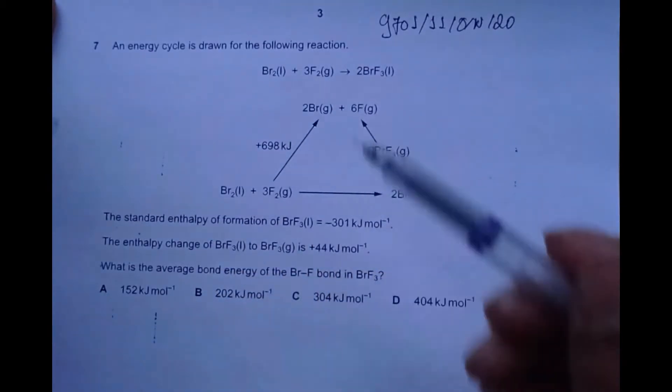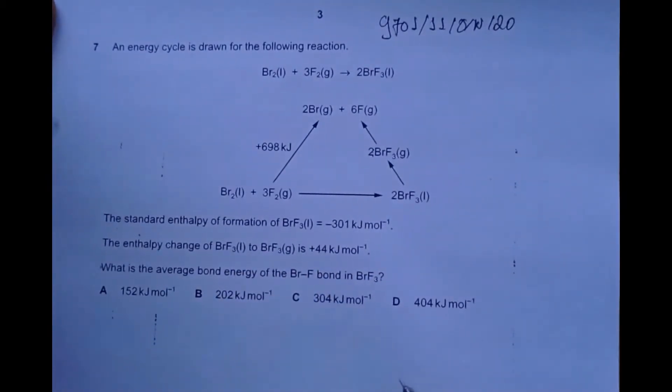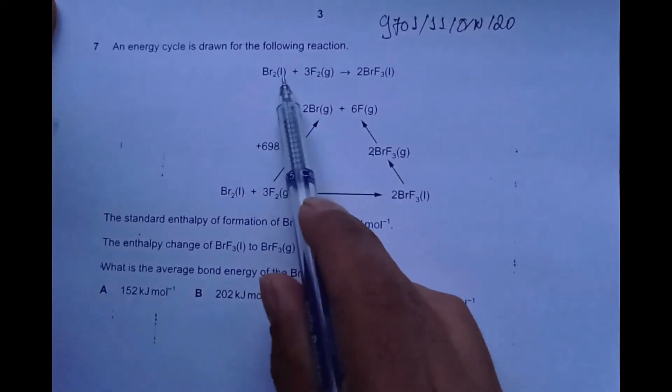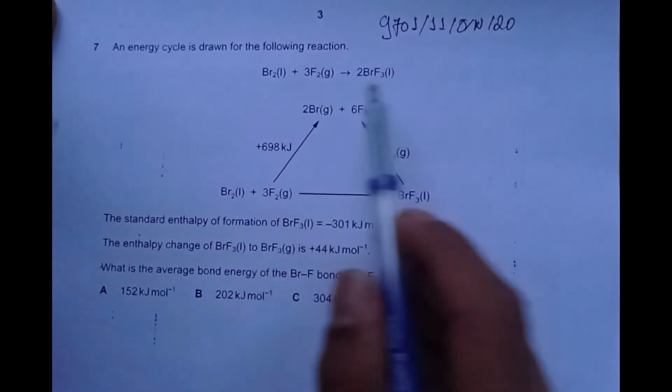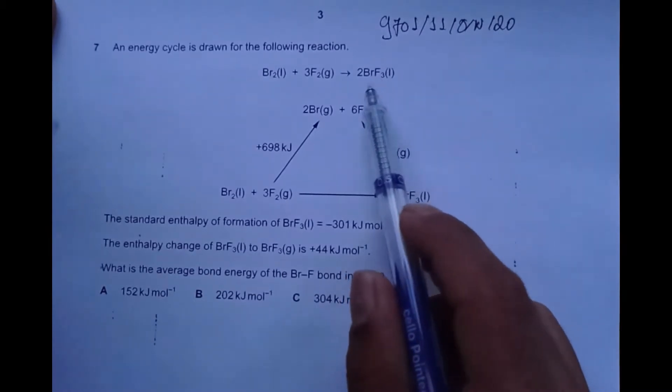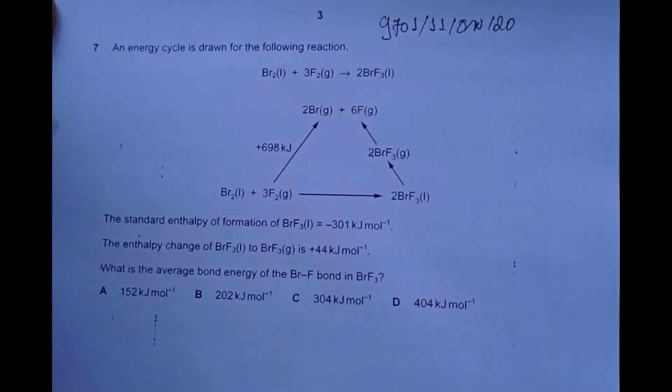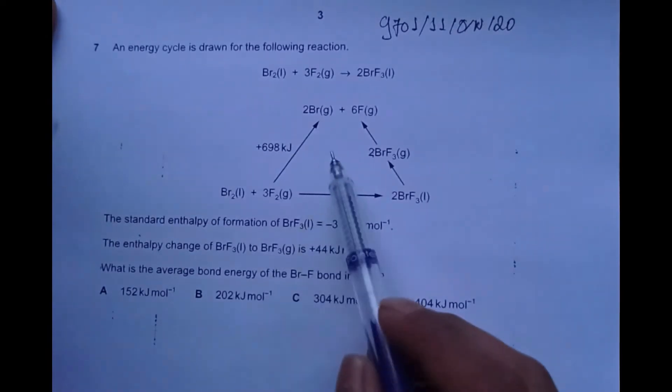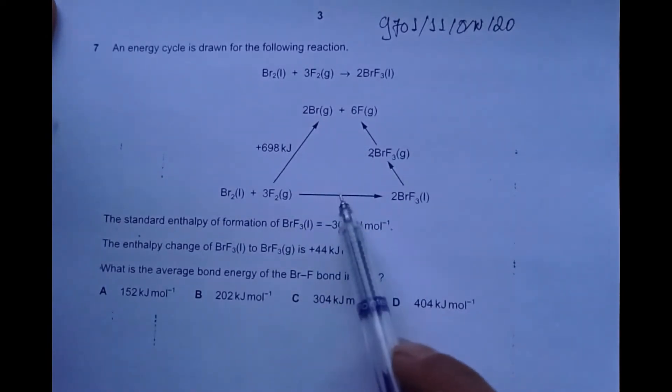An energy cycle is drawn for the following reaction. The energy cycle, also known as the Hess cycle, shows bromine liquid reacting with fluorine gas to give 2BrF3. This is an interhalogen compound, but we're not concerned with that. We have been given the Hess cycle.